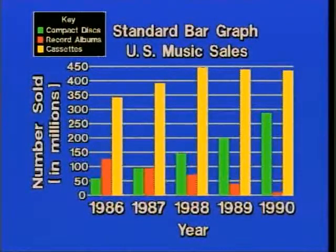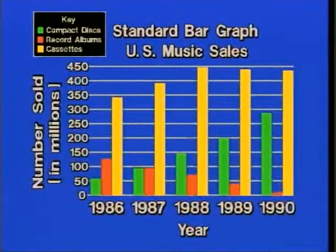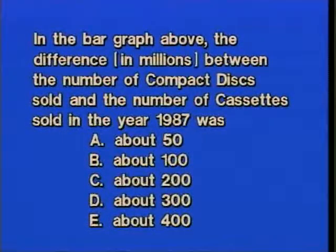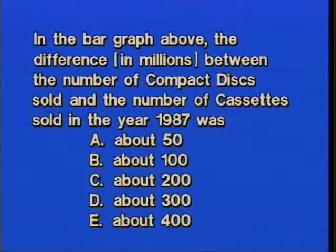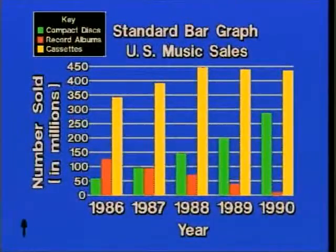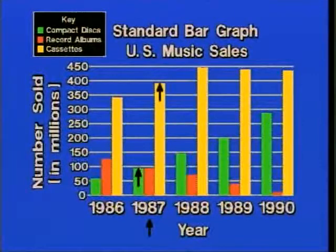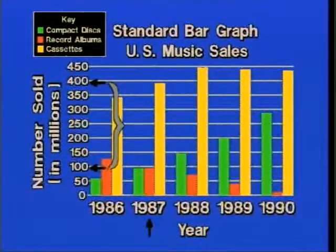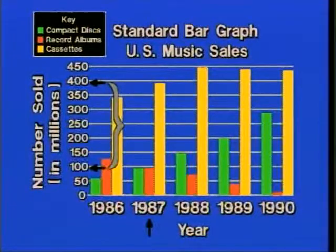On the left vertical axis is the number of items sold in millions. A first question might be: what is the difference in millions between CDs sold and cassettes sold in 1987? We go to the 1987 group, look at the green and yellow bars, and turn our attention to the left vertical axis to find the difference between the two levels. That's about 100 million versus 400 million — a difference of about 300 million.